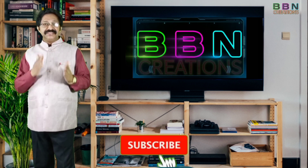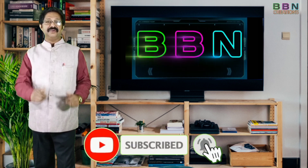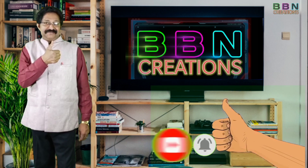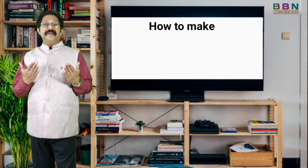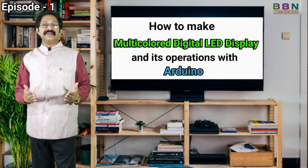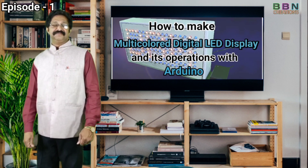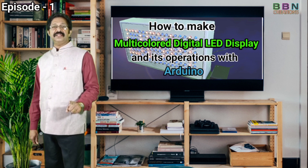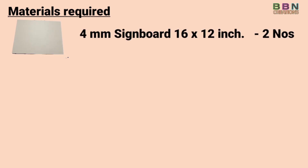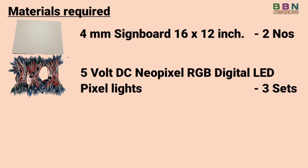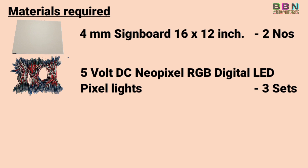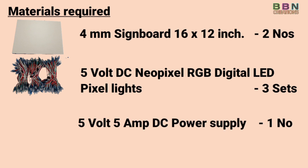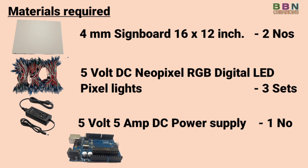Please subscribe to my channel and press the bell icon. If you like my video, give me a thumbs up. In this episode we are going to use RGB LED for making a multi-color display board. Materials required: 4mm sideboard, 5-volt DC NeoPixel RGB digital LED pixel light, 3 sets, and a 5-volt DC power supply.